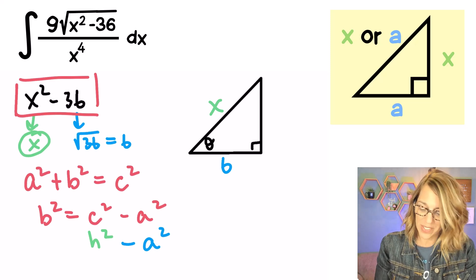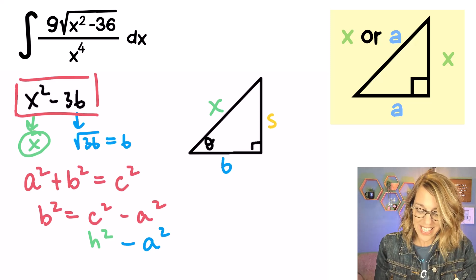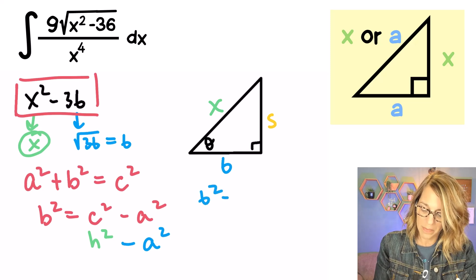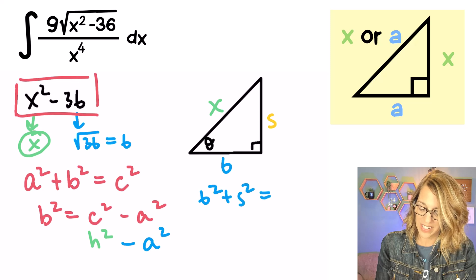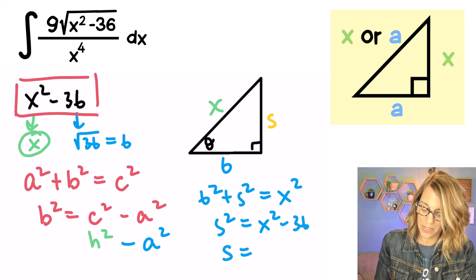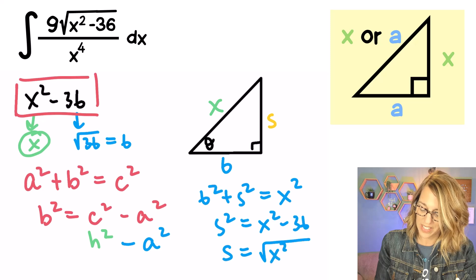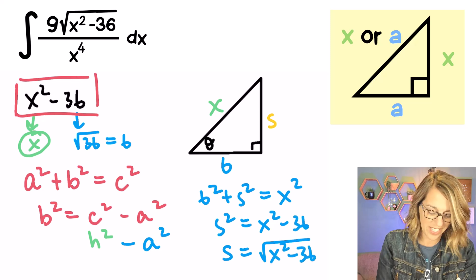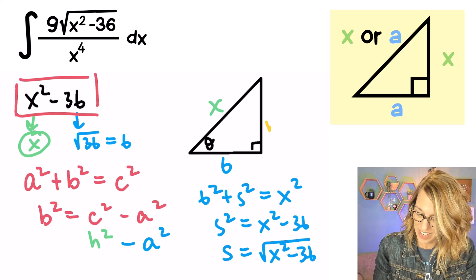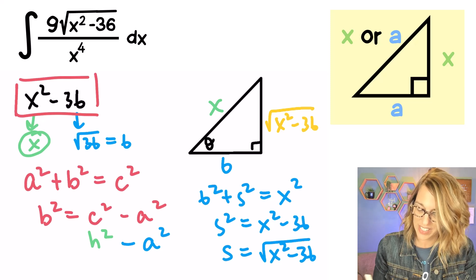The last thing I need to do is figure out what my side s is. Using the Pythagorean theorem: 6 squared plus s squared equals x squared. So s squared is x squared minus 36, and s equals the square root of x squared minus 36. I've got that labeled here.